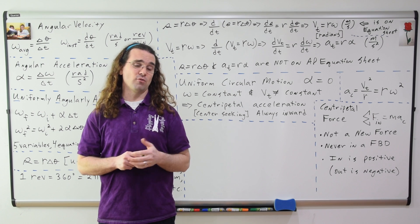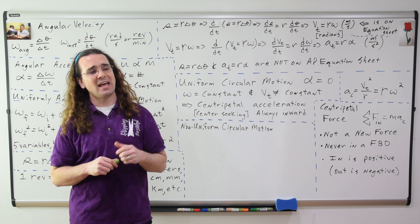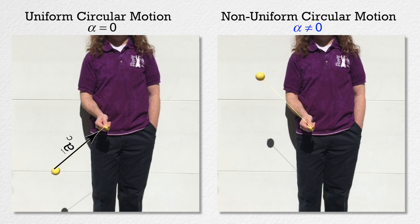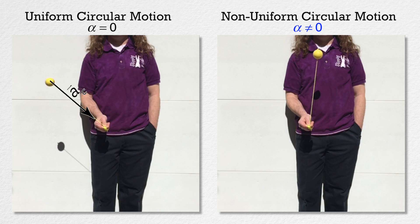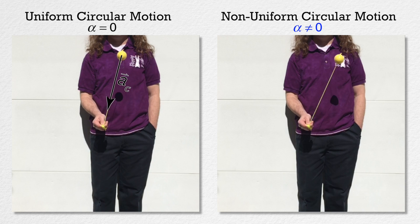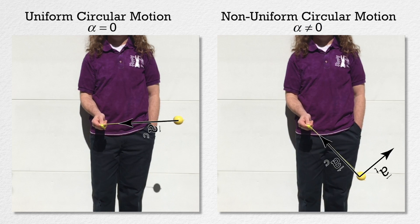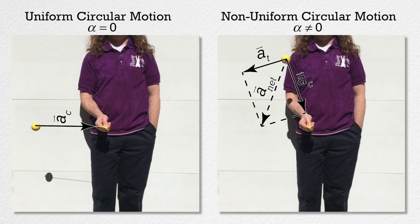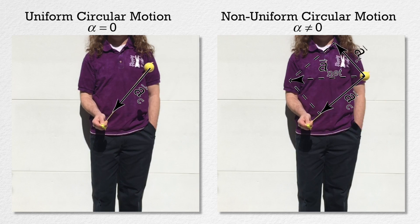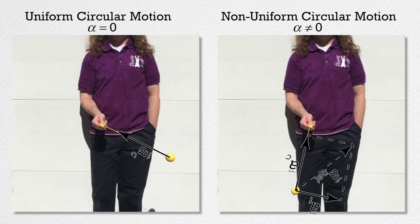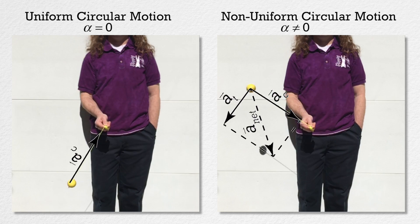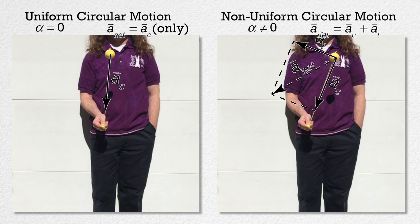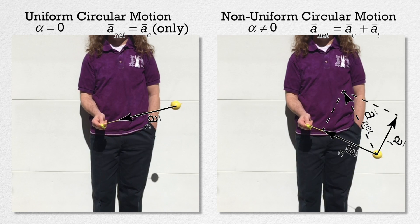Let's now talk about non-uniform circular motion. Billy, what needs to be true to have non-uniform circular motion? The angular acceleration of the object needs to not be equal to zero. When the angular acceleration is non-zero, the object has not only a centripetal acceleration directed in toward the center of the circle, but also a tangential acceleration which is tangent to the path. The acceleration of an object in non-uniform circular motion is the sum of both the centripetal and tangential accelerations, resulting in a total acceleration with a direction between the tangent and the inward direction.